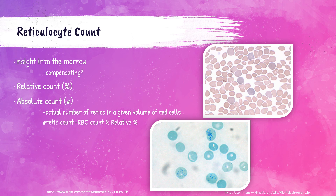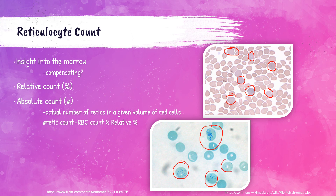Reticulocytes are the slightly less mature form of the erythrocyte. We see them as polychromasia on our Wright-stained slide — these would be seen as polychromasia when performing a manual differential. The bottom picture shows reticulocytes stained with a supravital stain called new methylene blue. If you see red cells that have little dots in them, those are reticulocytes. New methylene blue is the supravital stain we use to stain retics. Reticulocyte counts are actually one of the best ways to assess the function of the bone marrow in response to an anemia.